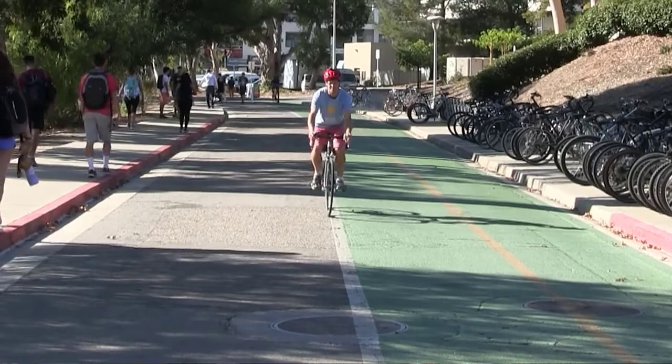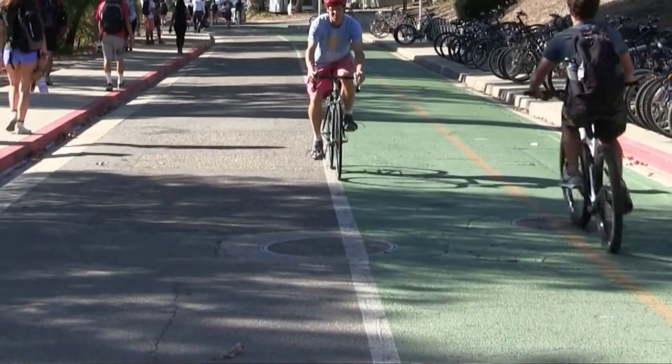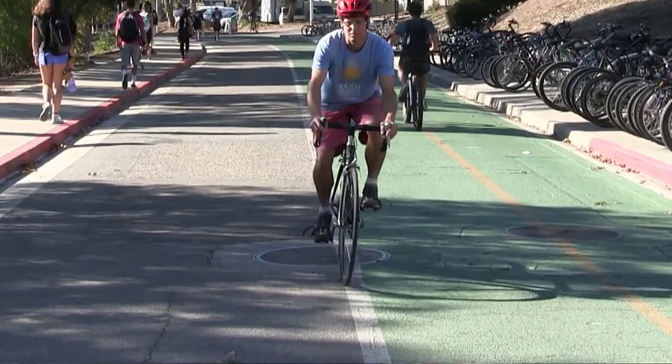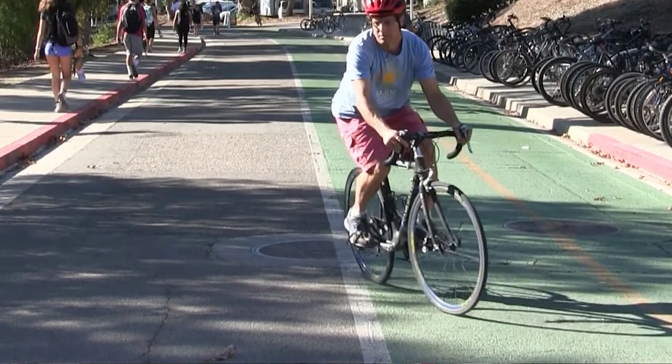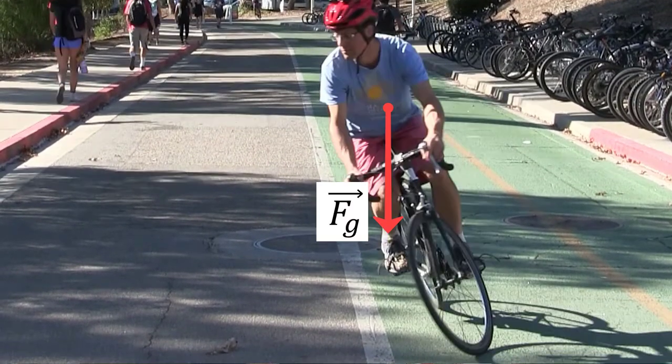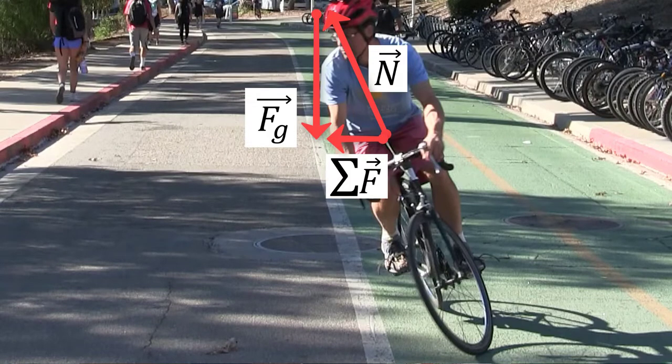Here you see me vertically oriented, riding in a straight line, in equilibrium. I turn the handlebars to the left and the wheels move out from under me to the left and I fall to the right, under the force of gravity. And then I turn the handlebars to the right and execute my turn.